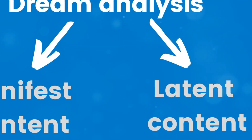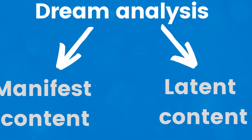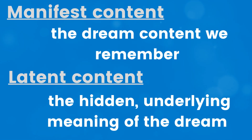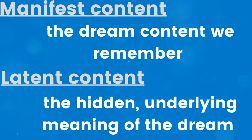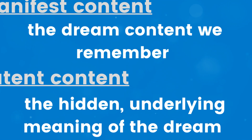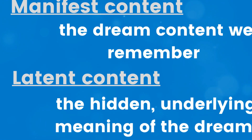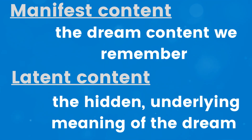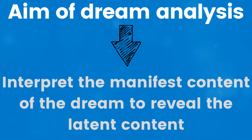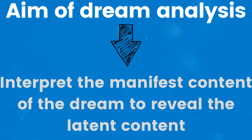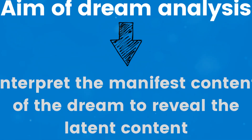Dream analysis involves two key concepts: manifest content and latent content. The manifest content is what we remember — the storyline, characters and settings in our dream. It's the surface level of the dream. Latent content, on the other hand, is the hidden underlying meaning, the symbolic messages from our unconscious. The goal of dream analysis is to interpret the manifest content in order to reveal the latent content and understand what our unconscious mind may be trying to tell us.